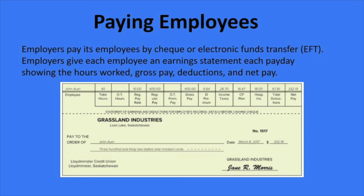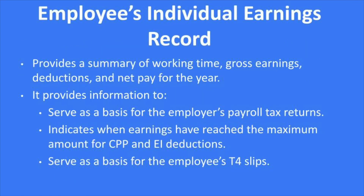The employer pays its employees by check or electronic funds transfer, and gives each employee an earnings statement each payday showing hours worked, gross pay, deductions, and net pay. The information would be recorded in the employee's individual earnings record, which provides a summary of working times, gross earnings, deductions, and net pay for the year. It also indicates when earnings have been received, the maximum CPP and EI deduction amounts, tells when they have been reached, and serves as the basis of the employee's T4.